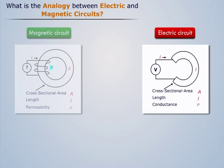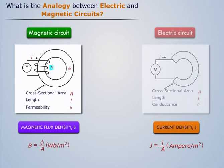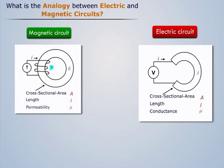The magnetic flux density is given by B = Φ/A. Magnetic flux density in magnetic circuits is similar to the current density in an electric circuit.